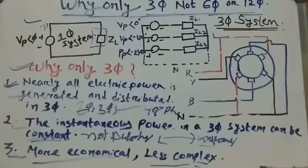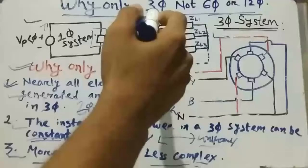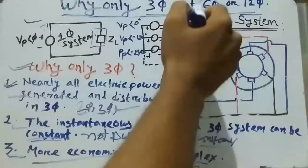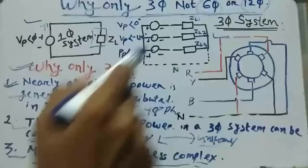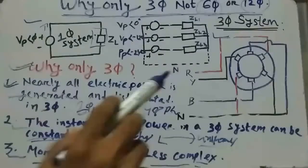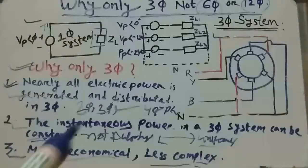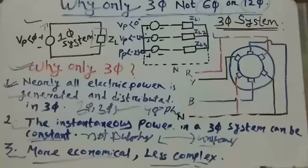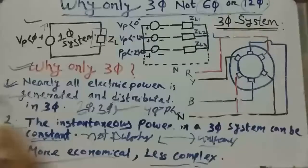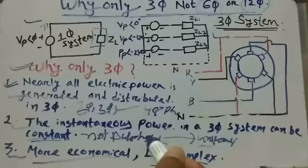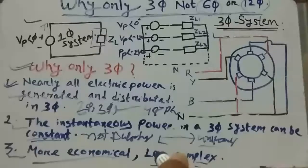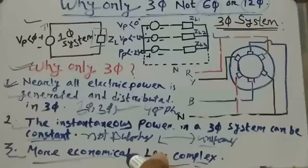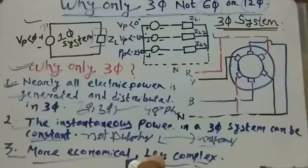So when this 3 phase will become 6 phase or 12 phase, it will be more complex because in 6 phase we need 6 number of bus bars and 6 number of circuit breakers. And for the 6 number of circuit breakers we need more number of CTs and PTs and the isolators.